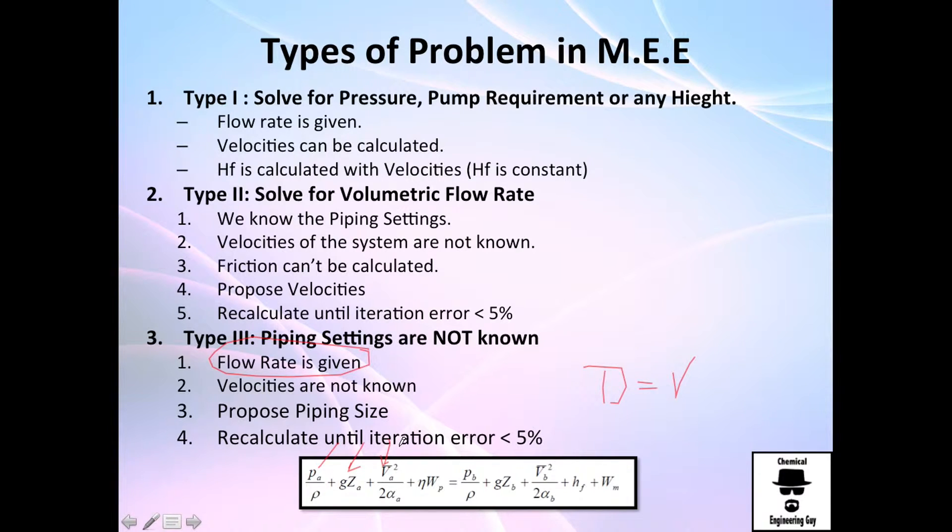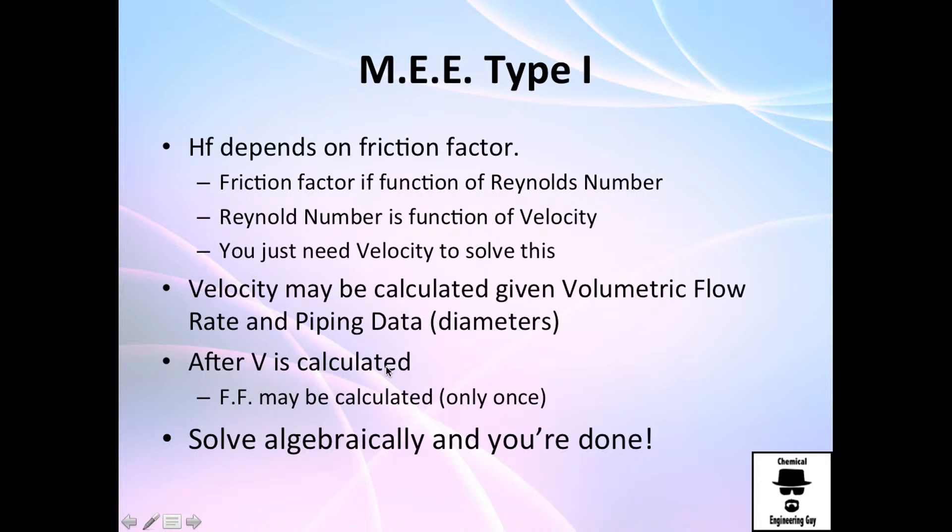I don't want to get into more detail, but that's the idea. When you have the velocities or you can calculate velocities, everything is easy and it's type number one. When you don't have volumetric flow rates, you cannot calculate velocities, so you need to guess volumetric flow rates and calculate velocities. And when you don't have the size of the diameter, you cannot calculate the velocities, so you need to propose the sizing and so on.